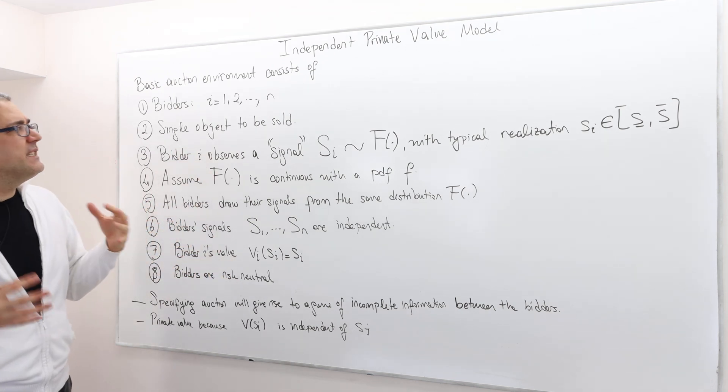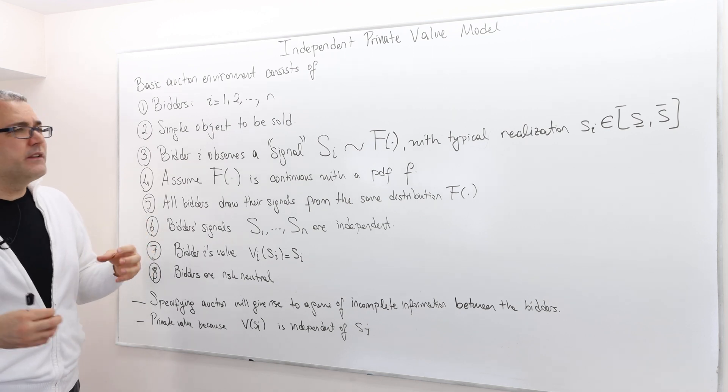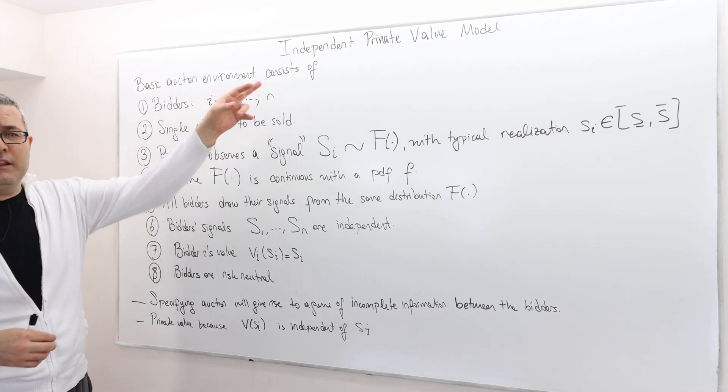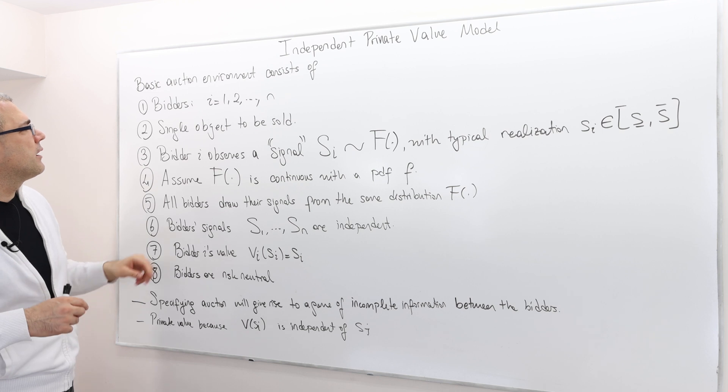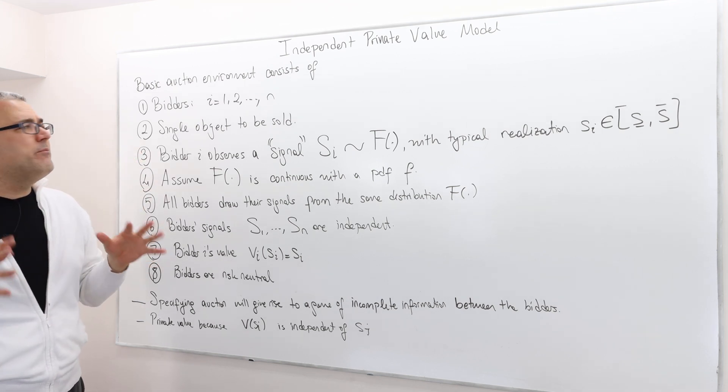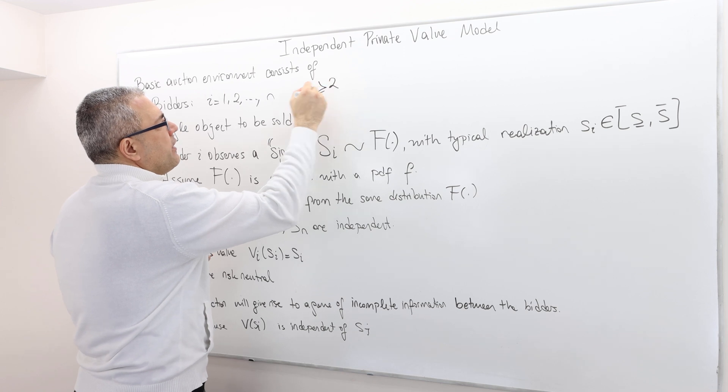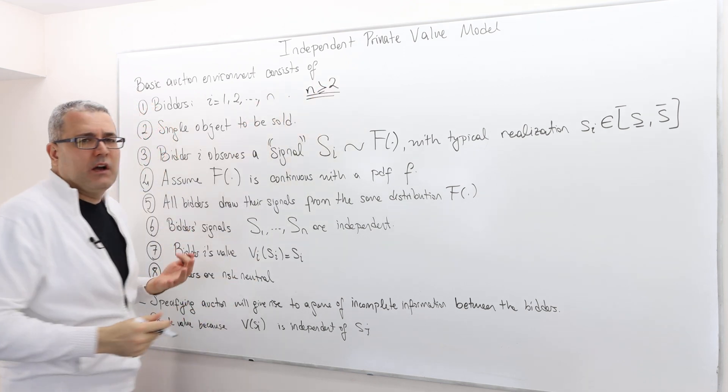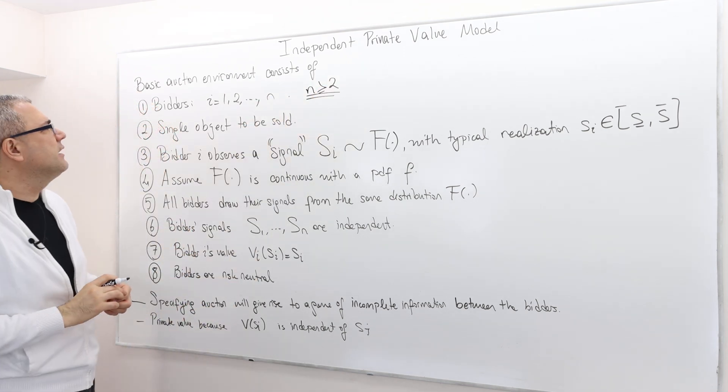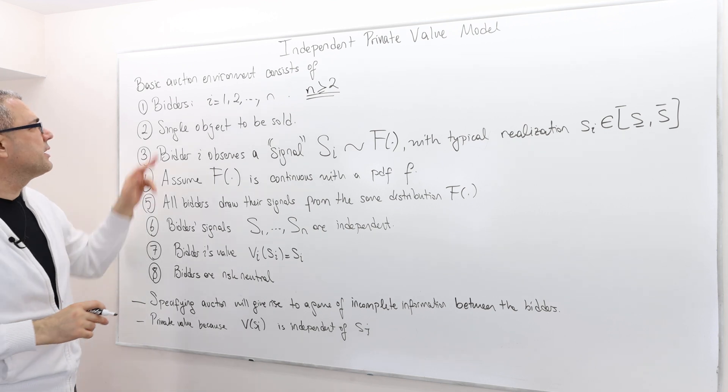What are the basics of an auction environment that we are considering in the independent private value model? Well, we have n mini bidders. n is greater than or equal to two, obviously, otherwise it's not interesting. So we should have at least two bidders.